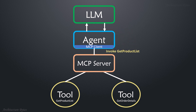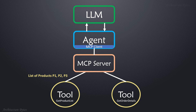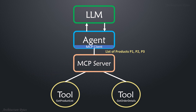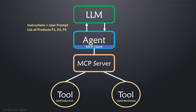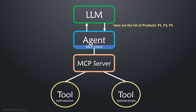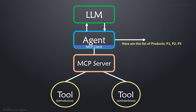The LLM reasons and responds with the name of the tool that must be invoked. The agent then sends a request to the MCP server to invoke the get product list tool. The MCP server invokes this tool, which returns a list of products. The MCP server returns this to the agent, which is then forwarded to the LLM. The LLM then formulates a response — here are the list of products — and that's the final output returned to the user.